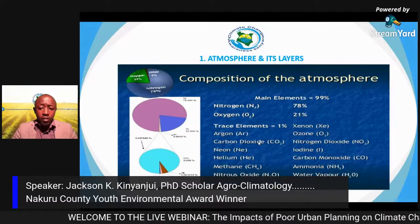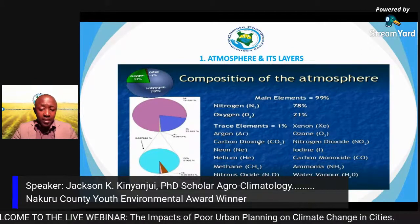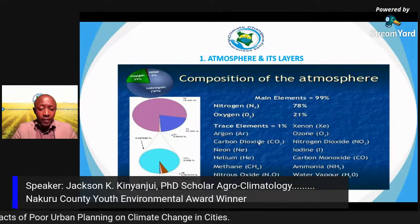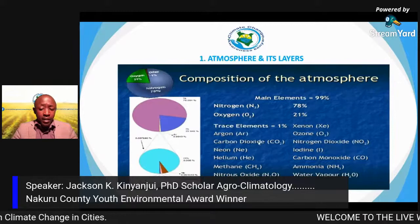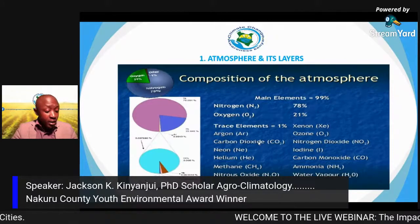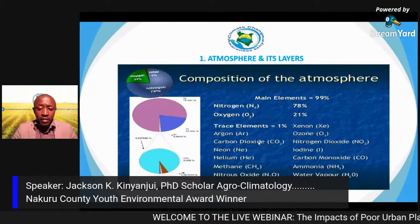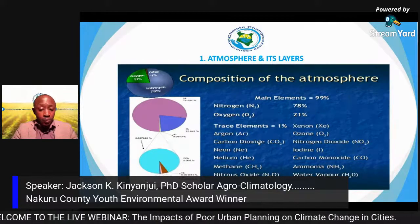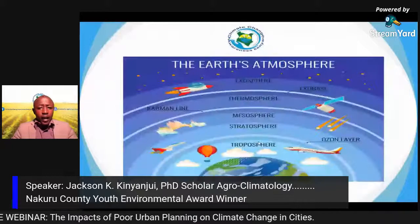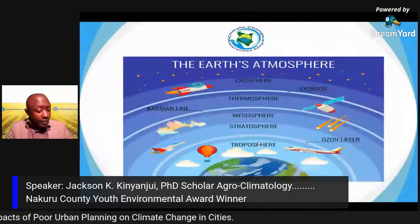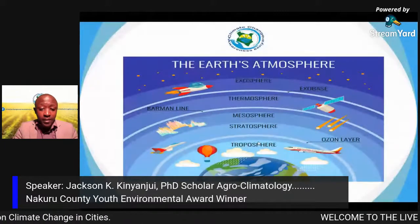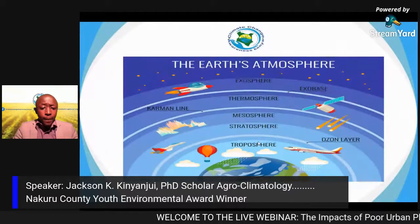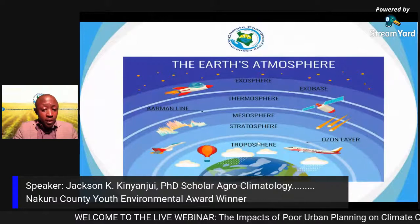We also need to remember that natural factors like volcanic activities are at play. As much as man has had the bigger hand, natural calamities also contribute. The Earth's atmosphere is composed of five layers: the troposphere, stratosphere, mesosphere, thermosphere, and exosphere.